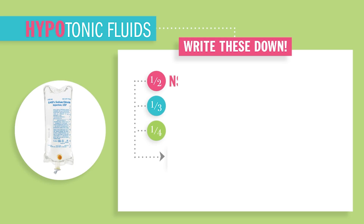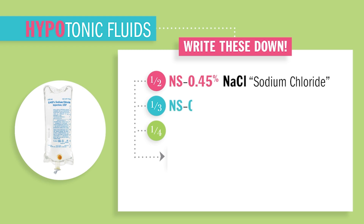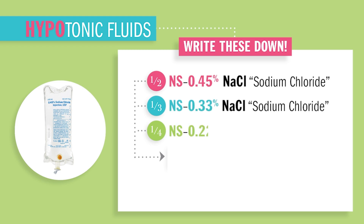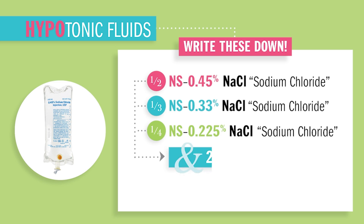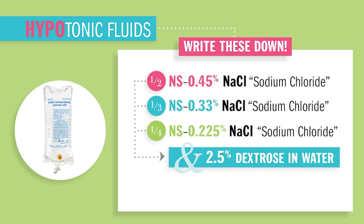Here is a list of hypotonic fluids: Half NS or 0.45% NaCl sodium chloride; one-fourth NS or 0.20% sodium chloride; one-third NS or 0.33% sodium chloride; and 2.5% dextrose in water, as well as D5W.